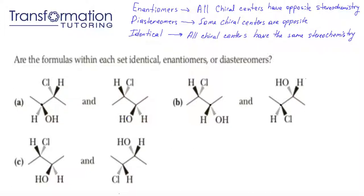In order to assign the R and S configuration, we must first find the chiral center — a carbon that has four different groups, like this carbon that I'm showing on the left molecule. We will assign the priority to each group from one to four, one being the highest priority and four being the lowest priority. The element with the highest atomic number gets a one, the element with the lowest atomic number gets a four, and when we're in between, we go atom by atom until we find the first difference.